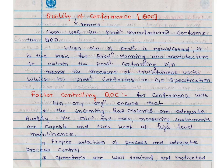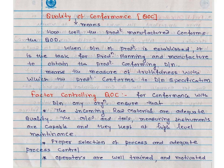When the design of a product is established, it is the task of production planning and the manufacturer to obtain the product confirming the design. That means, the measure of truthfulness with which the product confirms to design specification. The various factors controlling the quality of conformance.